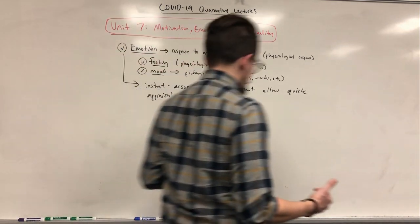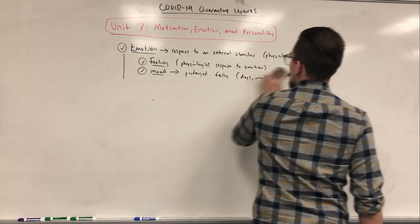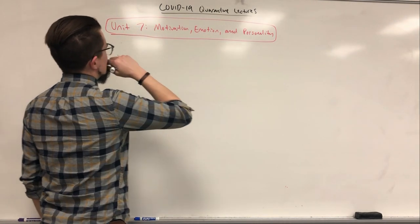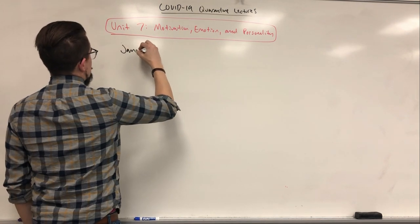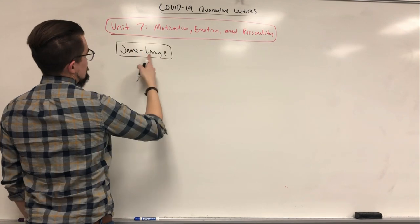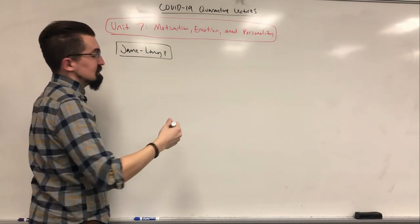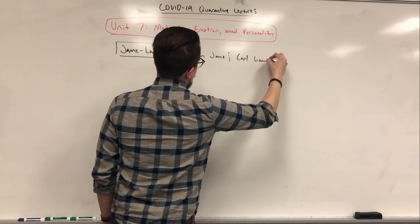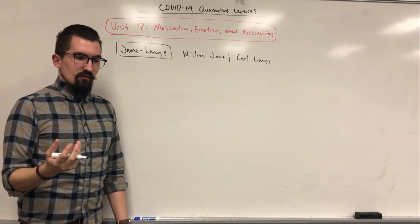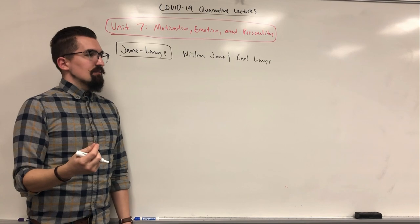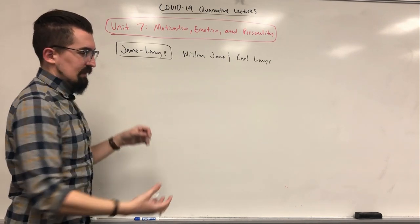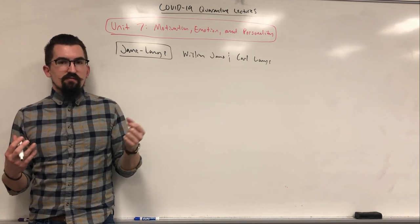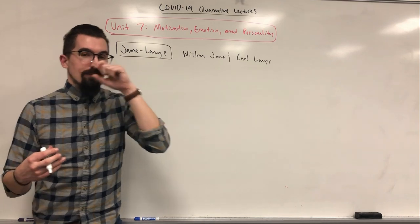There have been lots of explanations for emotions and we'll go through several of them. One of the first theories for emotions came from William James and his partner Carl Lange — this is known as the James-Lange Theory. They proposed that emotions were dependent on our physiological responses. The scenario is: you have a stimulus, you get a physiological response, you get a feeling, and then you perceive that feeling as sadness, anger, happiness, or whatever it might be.